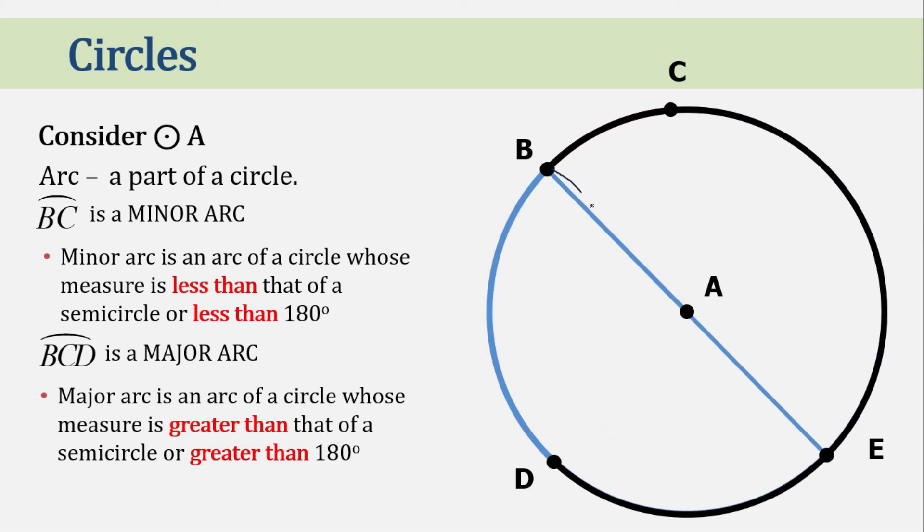I purposely drew this line to divide the circle into two equal parts. So this part is 180 and this part is 180. So it is obvious that this arc is greater than 180.